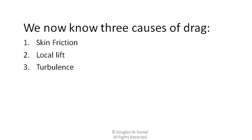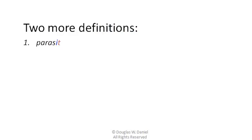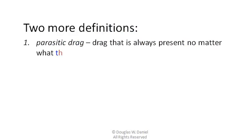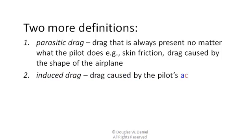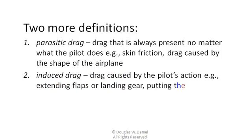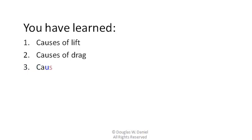Now, two more definitions. Parasitic drag is the drag that is always present no matter what the pilot does — for example, skin friction and drag caused by the shape of the airplane. Induced drag is the drag caused by the pilot's action — for example, extending flaps or landing gear, or putting the airplane into a tight turn. You have now learned the causes of lift, the causes of drag, and the cause of stall.